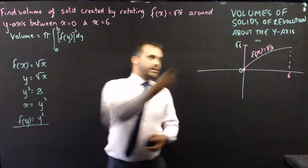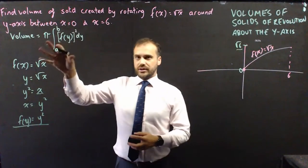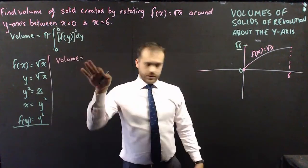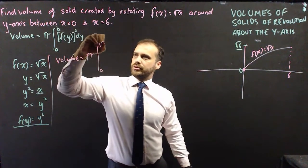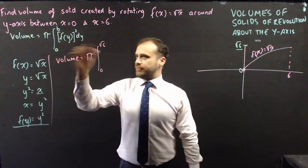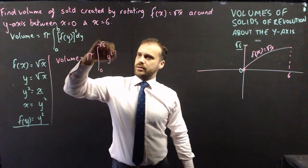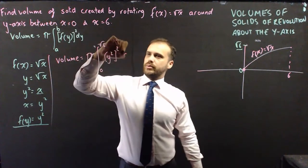Now that I know that, and now that I know that, I can fill in my full formula there. So volume equals pi times between 0 and root 6, f(y), which is y squared, squared with respect to y.